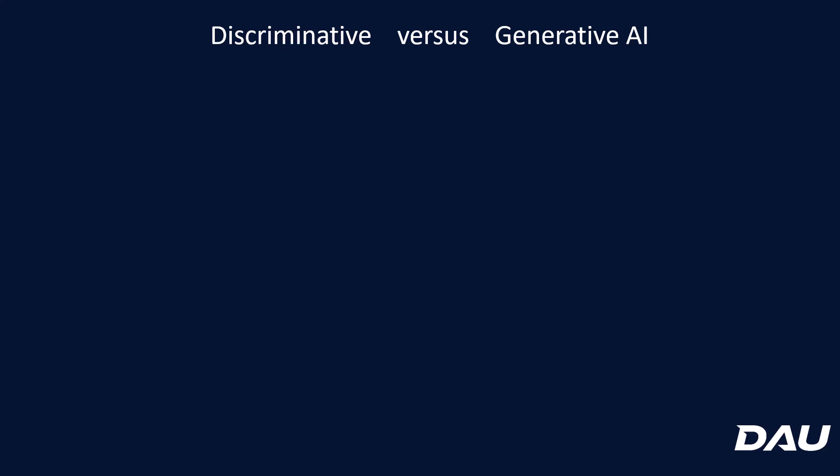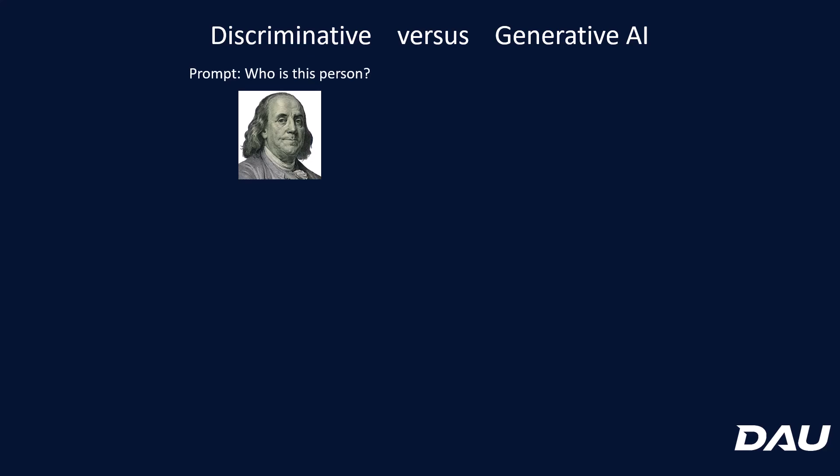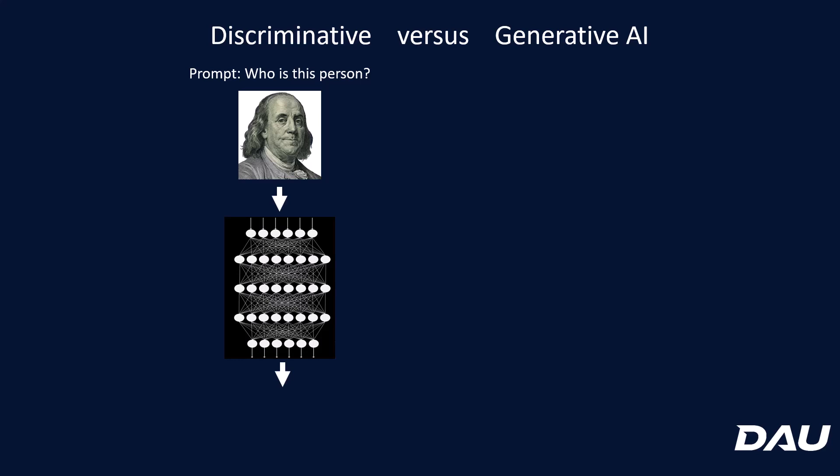I'm sure you've heard of ChatGPT — the G in ChatGPT is generative. So let's say you have a picture that you would like the network to tell you, who is this person? This is discriminative — you want to discriminate between this person and all the other people in the neural network's memory. The network has been trained to recognize faces, and you give it this face and out comes Ben Franklin.